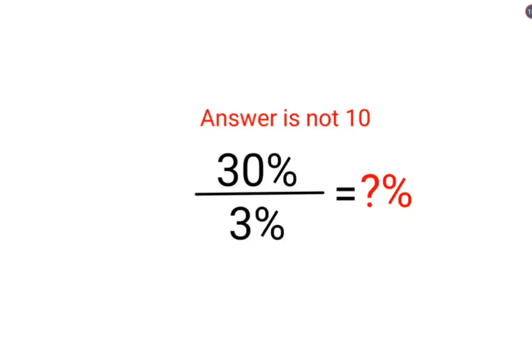Welcome everyone. Today we are going to solve a very nice percentage problem. Here we have 30% divided by 3%. Normally people would think that the percentages can get cancelled and the 30% will be cancelled by 3%.